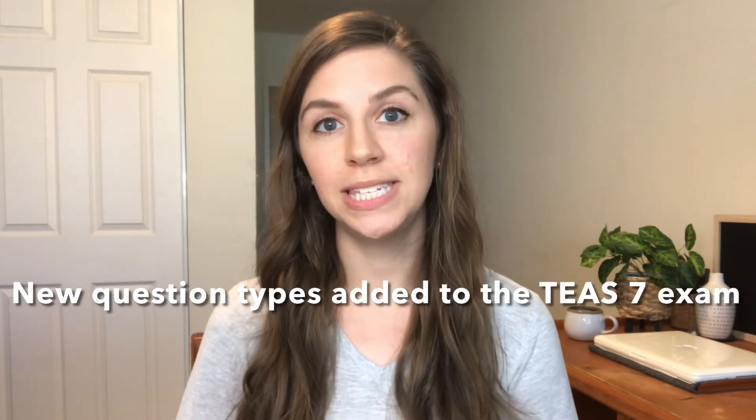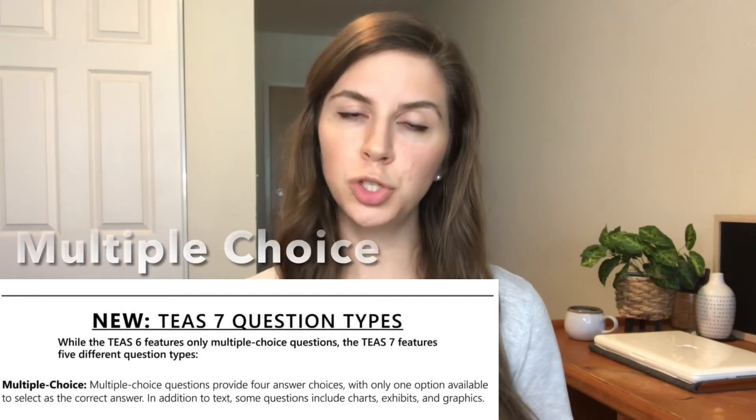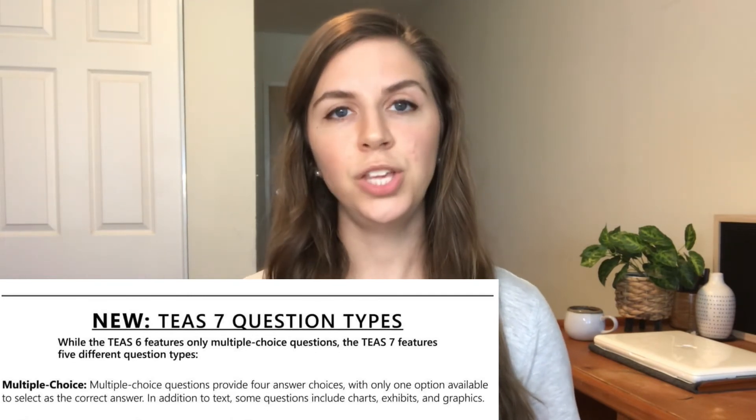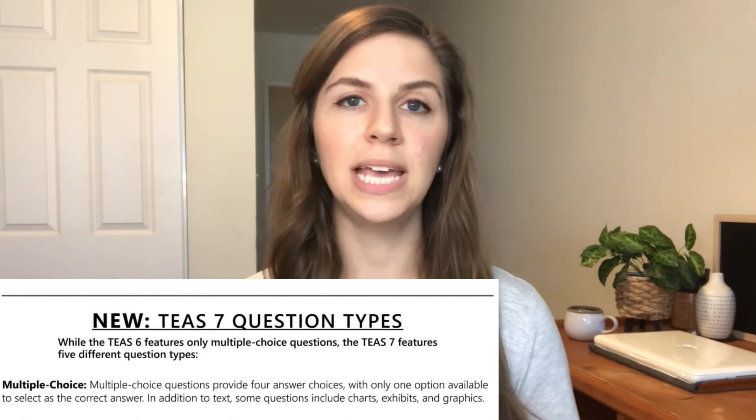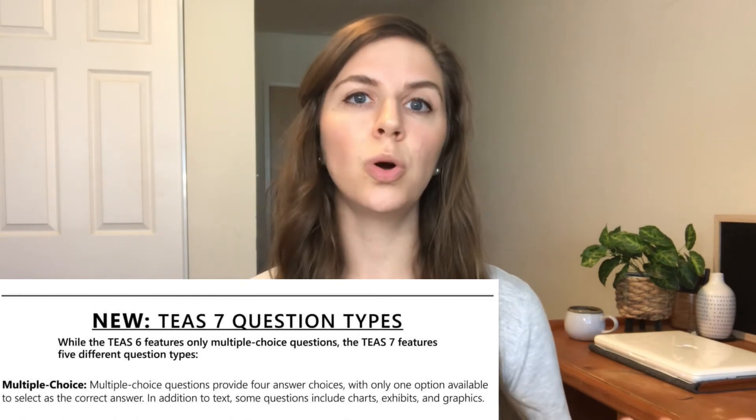Now we'll get into the second major change from the TEAS 6 to the TEAS 7: the types of questions you are going to see. On the TEAS 6 there were only multiple choice questions — that was it. The TEAS 7 has updated to include different question types, basing them on the next-gen NCLEX question types, modeling after that format to help you prepare. In addition to multiple choice — where you have a question with four answer options and select the one correct answer, sometimes with graphs or pictures — there are four other question types.